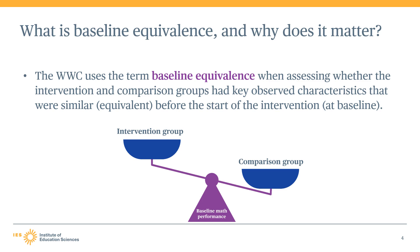Why does baseline equivalence matter? Imagine a study in which the intervention and comparison groups earned very different scores on a test before receiving the intervention. If the study also found that the groups performed differently after receiving the intervention, how would we know whether those differences were due to the intervention or to the fact that one group's members were already ahead before they received the intervention?